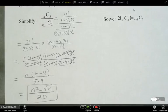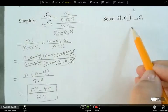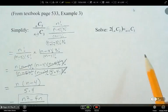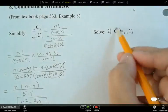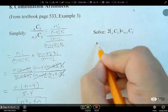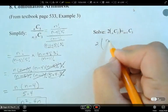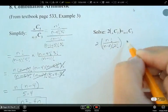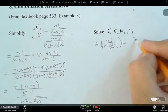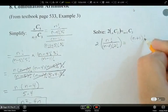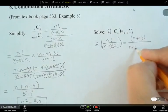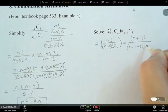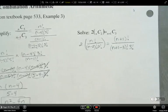Now the second one. The second one here, this is an actual equation. So we have to solve for n. That's our goal. But first what we're going to do is we're going to write all of these in factorial notation. So 2 times n factorial over n minus 2 factorial times 2 factorial. And then that is equal to n plus 1 factorial over n plus 1 minus 3 factorial times 3 factorial.